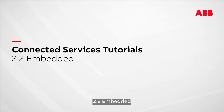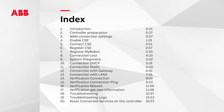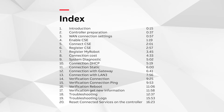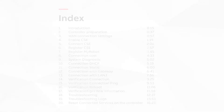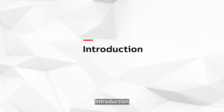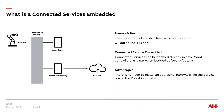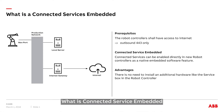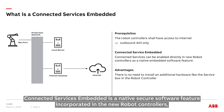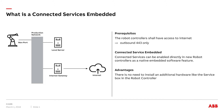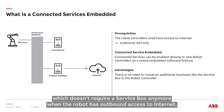2.2 Embedded Introduction. What is Connected Services Embedded? Connected Services Embedded is a native secure software feature incorporated in the new robot controllers which doesn't require a service box anymore when the robot has outbound access to the internet.